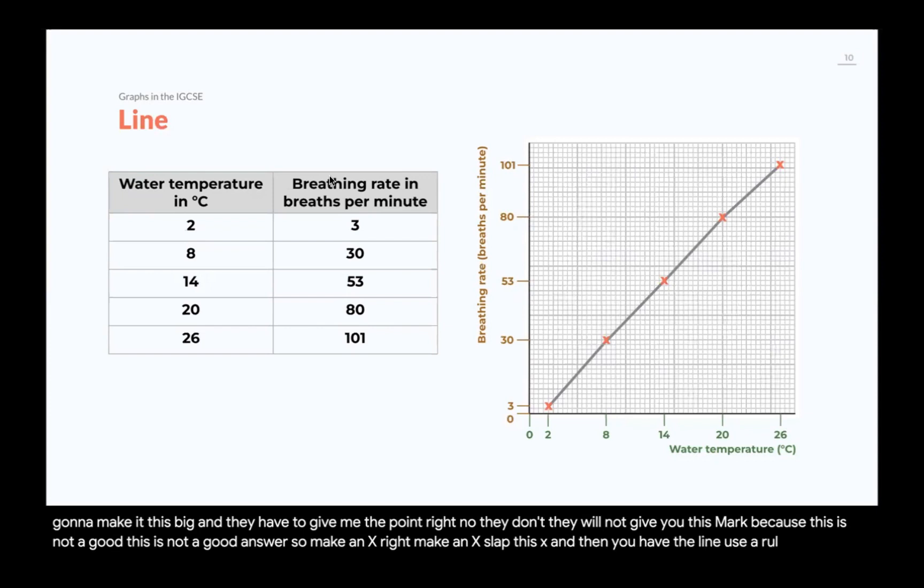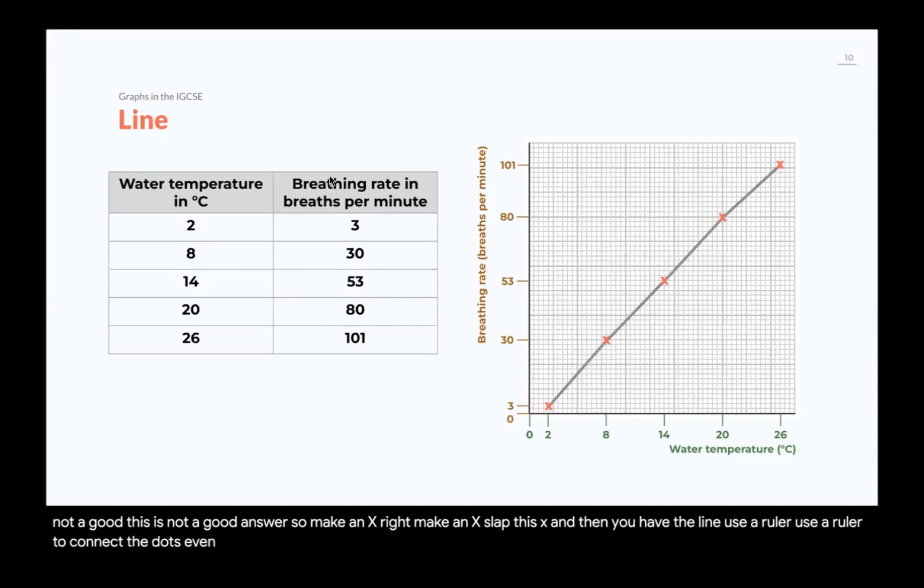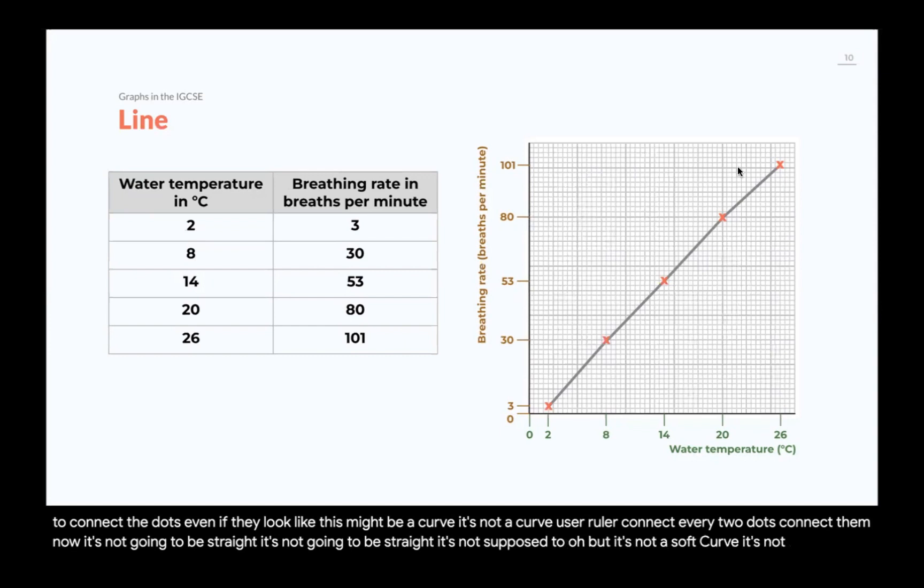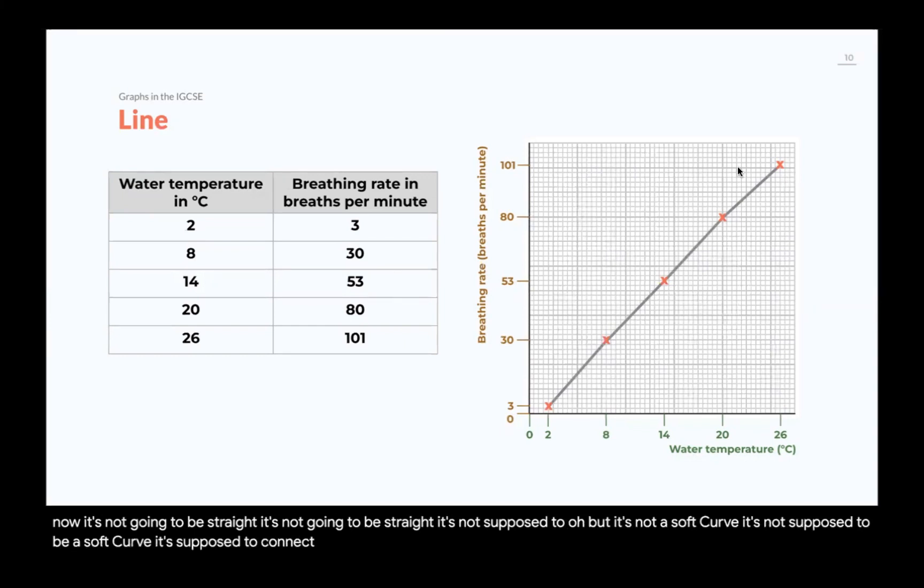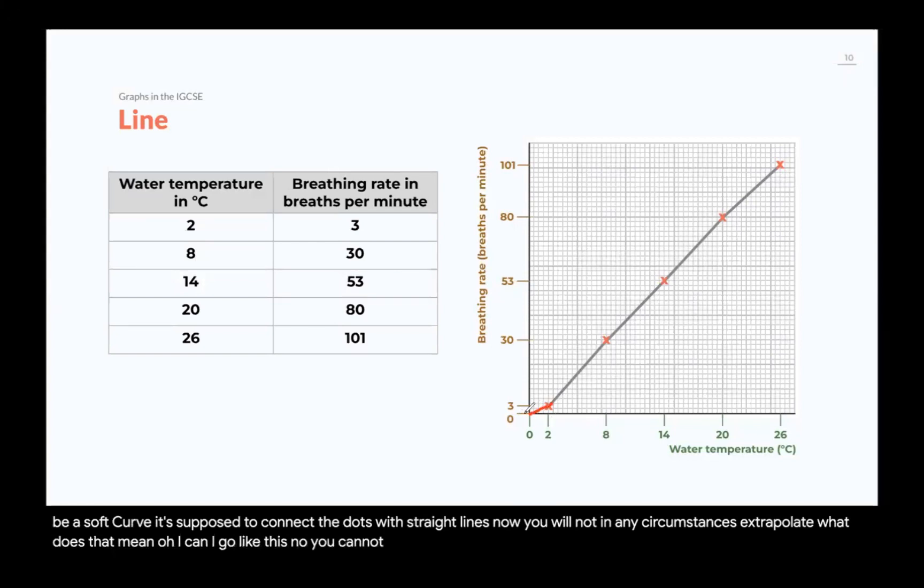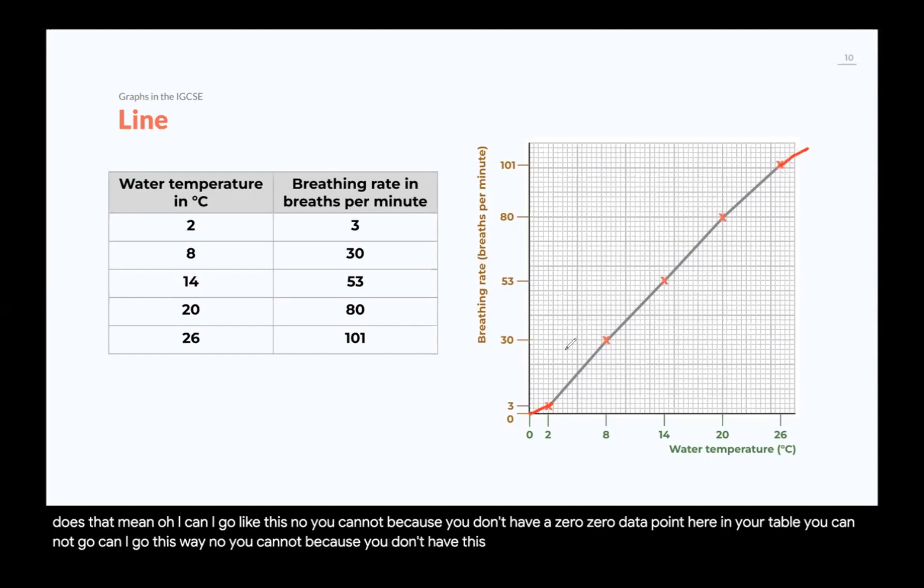Use a ruler. Use a ruler to connect the dots. Even if they look like this might be a curve, it's not a curve. Use a ruler. Connect every two dots. Connect them. It's not going to be straight. It's not going to be straight. It's not supposed to be. But it's not a soft curve. It's not supposed to be a soft curve. It's supposed to connect the dots with straight lines. Now, you will not in any circumstances extrapolate. What does that mean? Can I go like this? No, you cannot because you don't have a 0, 0 data point here in your table.